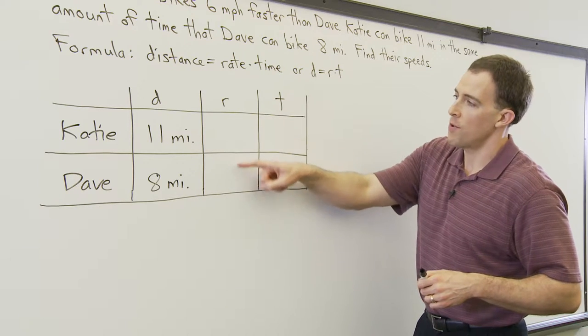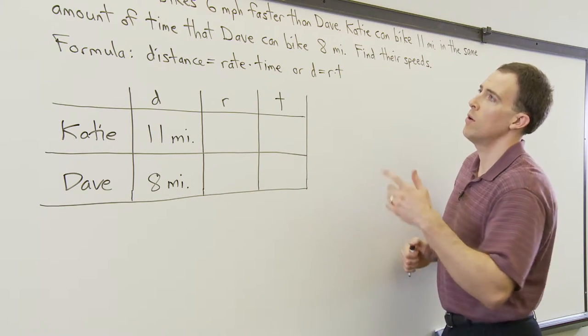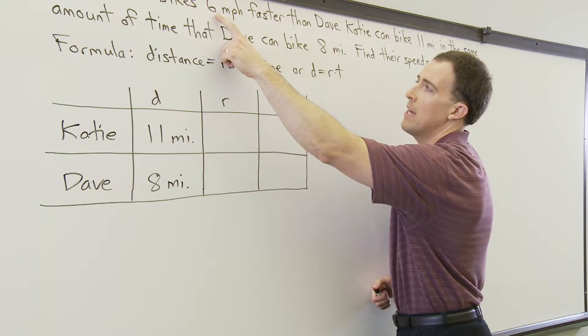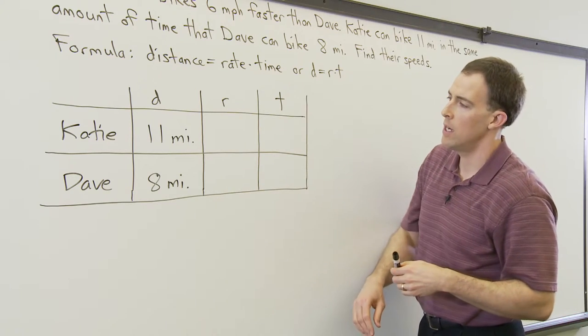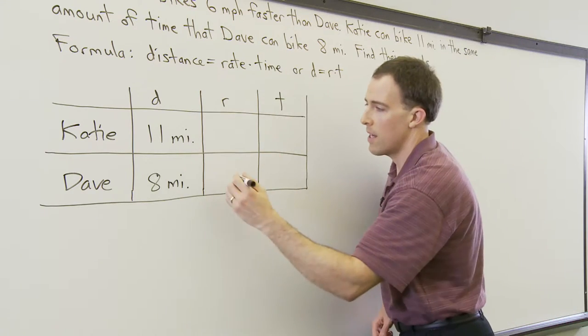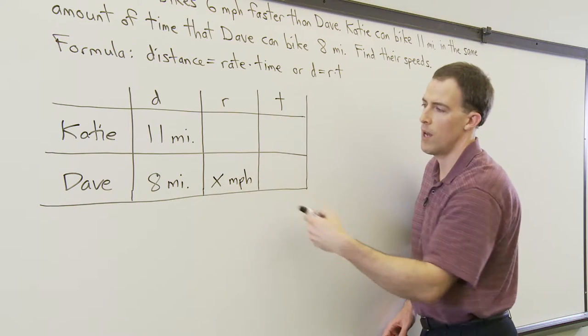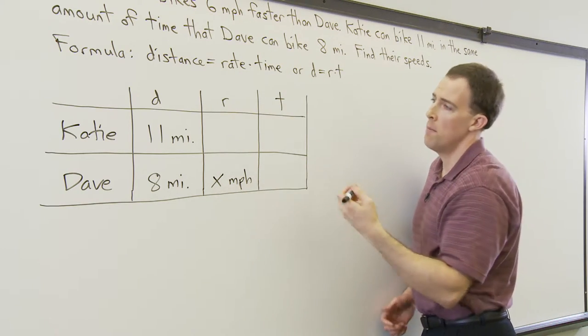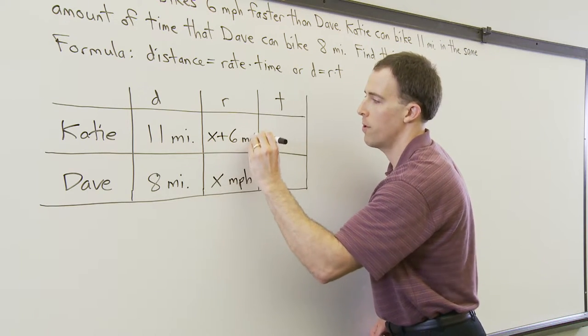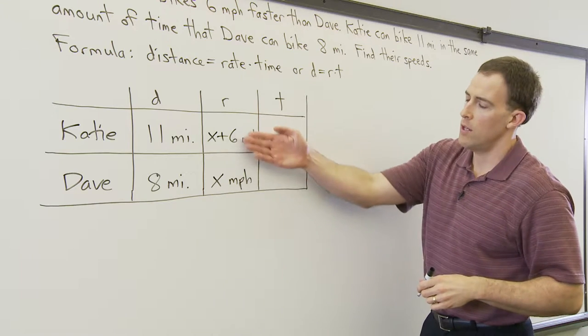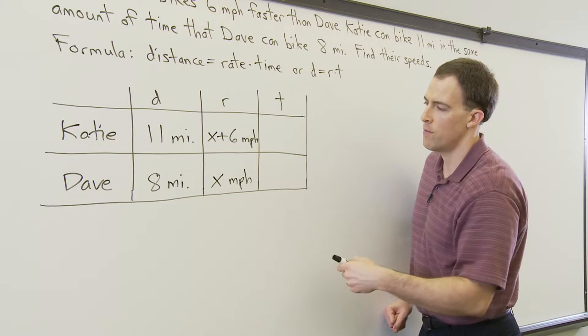Then we want to see if we have the rates or the speeds for either one of them. We have information that Katie can bike 6 miles per hour faster than Dave. That's information about her rate relative to his rate. So if he could go X miles per hour, I'm going to make that his speed or his rate. She goes 6 miles per hour faster than him. Her rate then can be expressed as X plus 6 miles per hour.